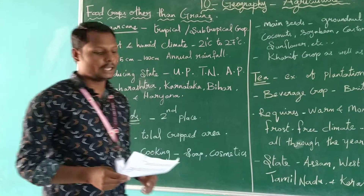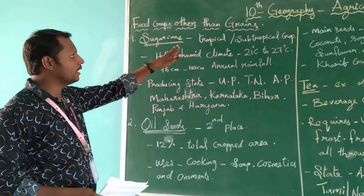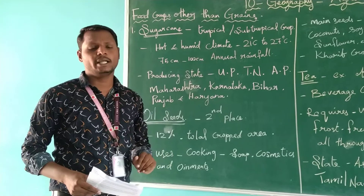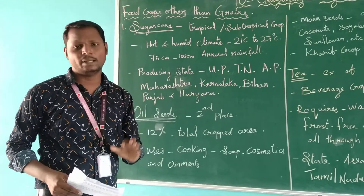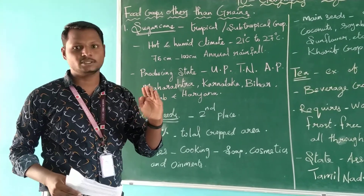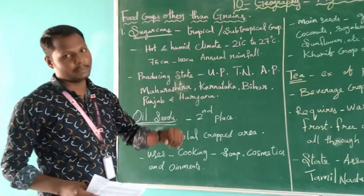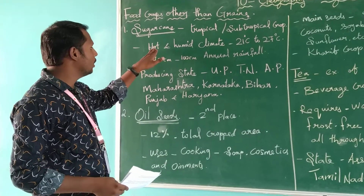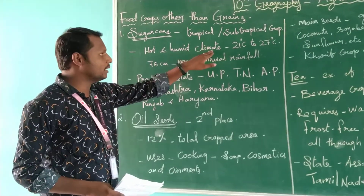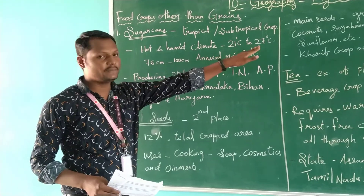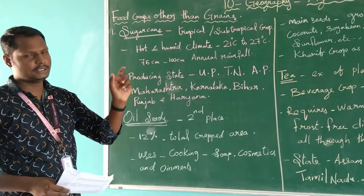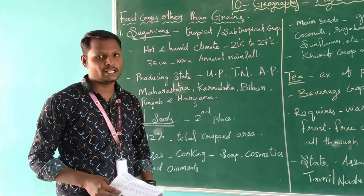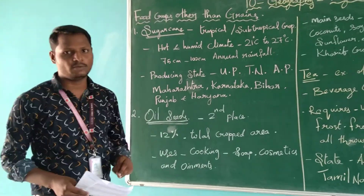First, sugarcane. Sugarcane is a tropical and subtropical crop. India has both tropical and subtropical climates because the Tropic of Cancer crosses our country. Sugarcane grows in this kind of climate. The required climate for sugarcane is hot and humid, with a temperature range of 21 to 27 degrees Celsius and annual rainfall of 75 to 100 centimeters.